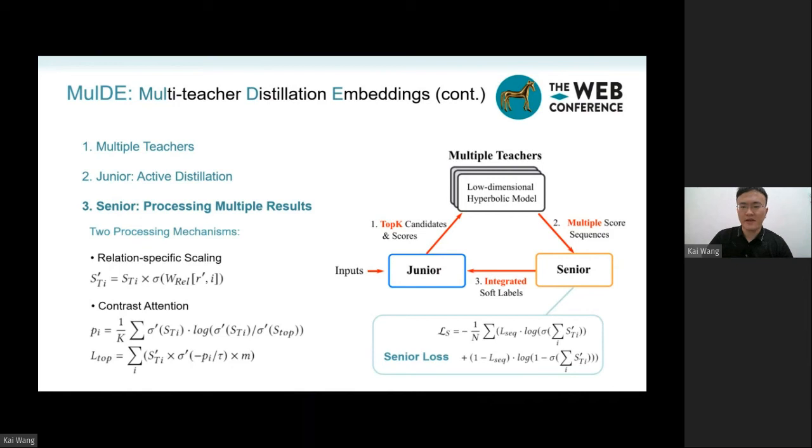The teacher having similar results to the junior would obtain higher attention, such that the final soft labels would be easier to be matched by the junior scores. Note that the senior is high-efficient,